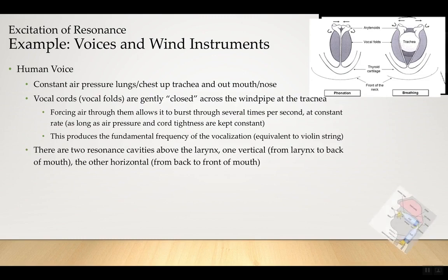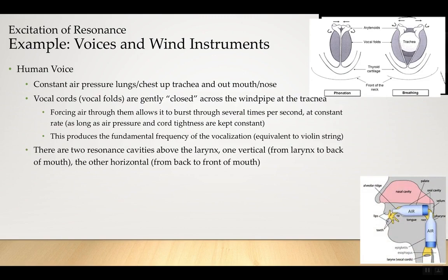There are two resonance cavities above the larynx. One is vertical — from the larynx to the back of the mouth. The other is horizontal — from the back of the mouth to the front of the mouth. It's similar to blowing over the top of a bottle, which excites those cavities of air that want to vibrate at a certain frequency. These produce two main formants — the first two are the most important, and the shapes of the cavities determine which upper resonances are excited and which are suppressed.